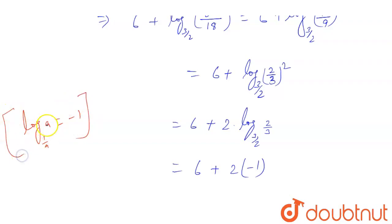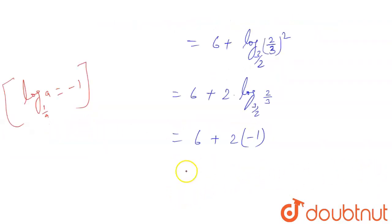Whenever the base and number are reciprocal to each other, then the value of that log is minus 1. So this will be 6 minus 2, which equals 4. And we got the final answer: 4.